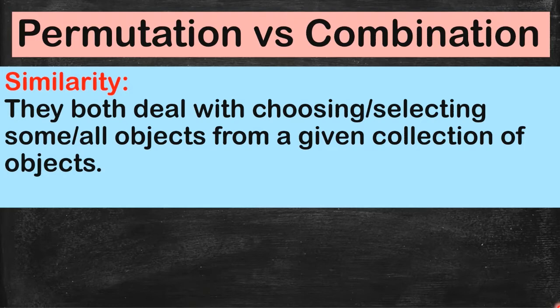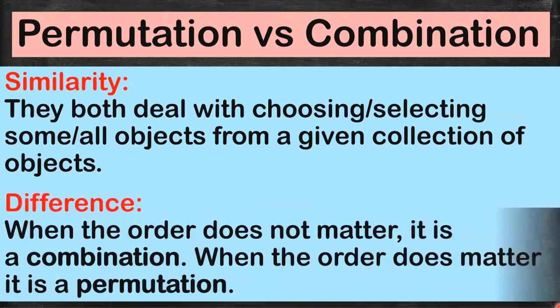So what is the difference between them? Their difference is: in a combination, the order does not matter. But in a permutation, the order is very important.